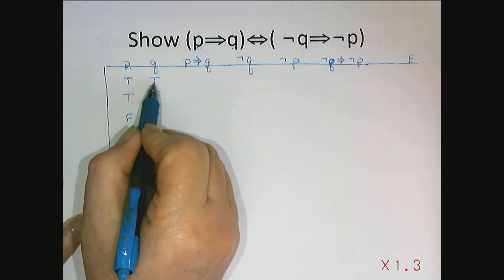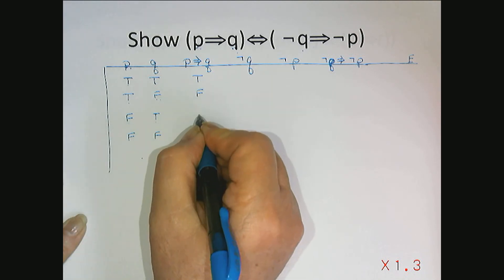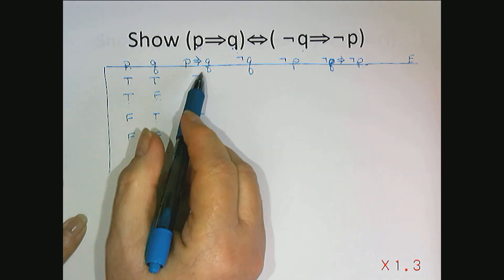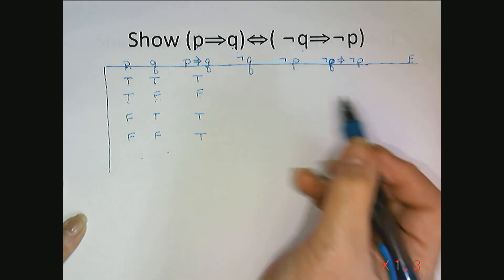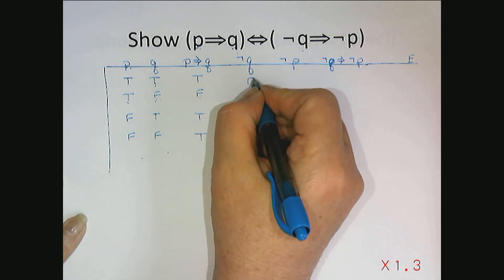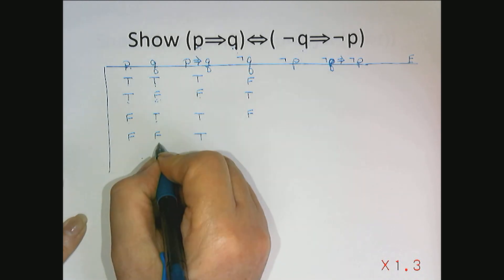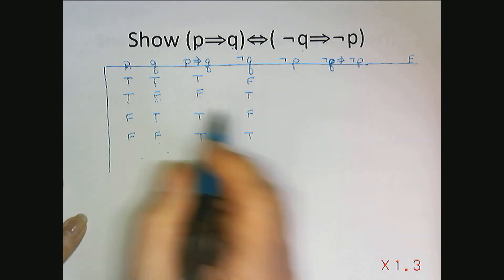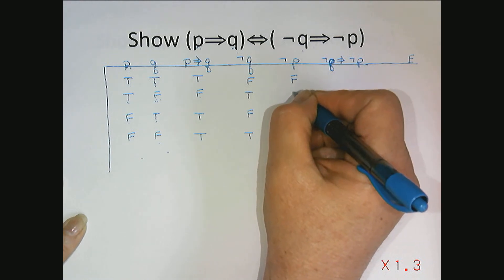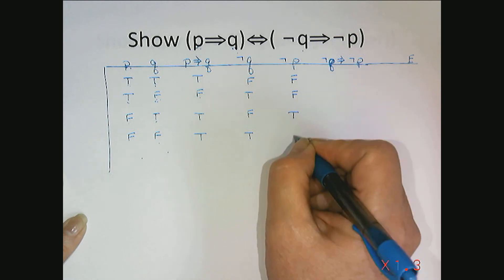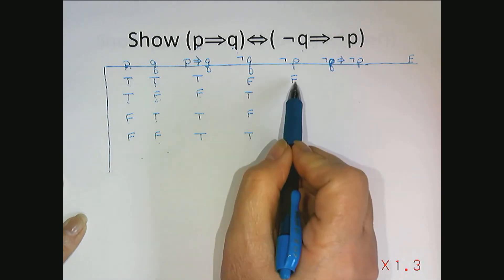For p implies q: true implying true is true; true implying false is false; false implying true is true; false implying false is true. The only time an implication is false is if p is true and q is false. Now for not q: if q is true then not q is false; if q is false then not q is true. For not p: not true is false, not true is false, not false is true, not false is true — giving the column false, false, true, true.